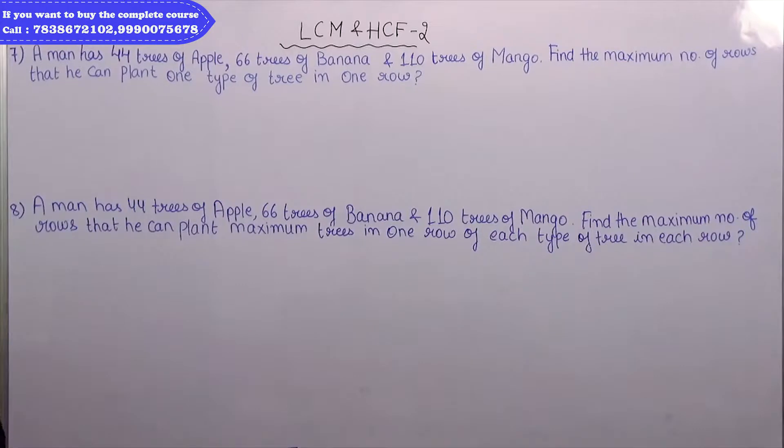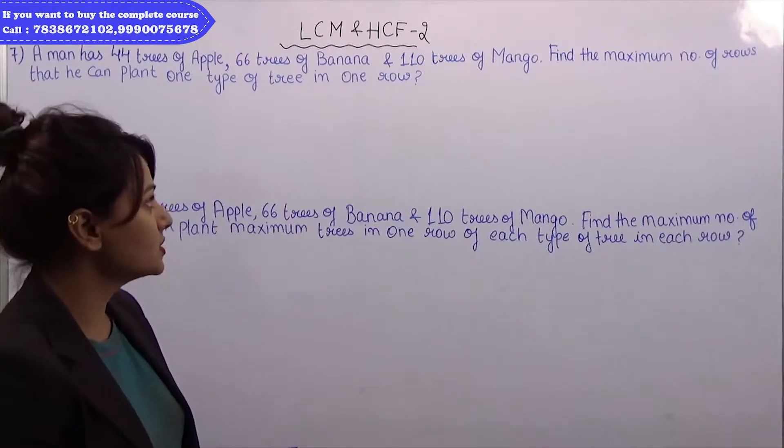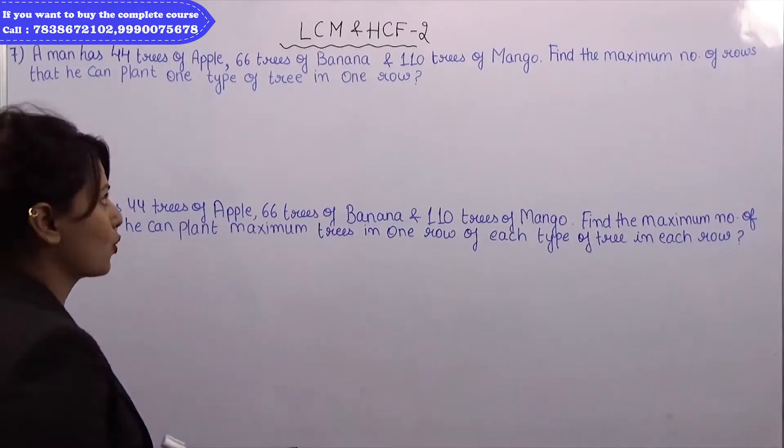The question is: a man has 44 trees of apple, 66 trees of banana and 110 trees of mango. Find the maximum number of rows that he can plant one type of tree in one row.